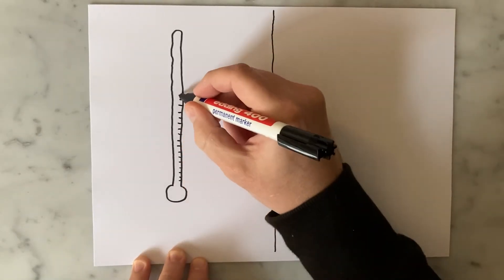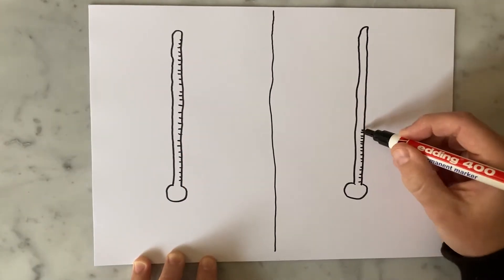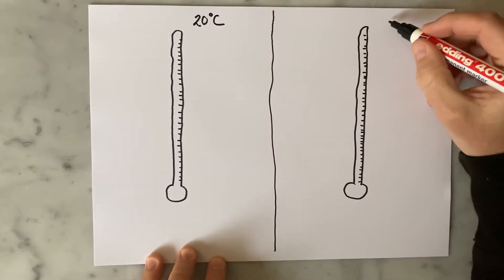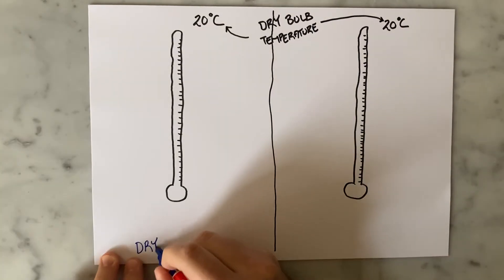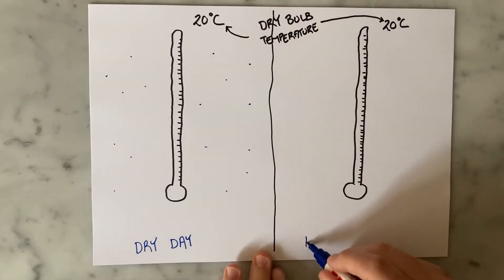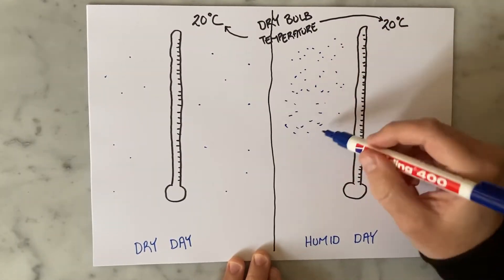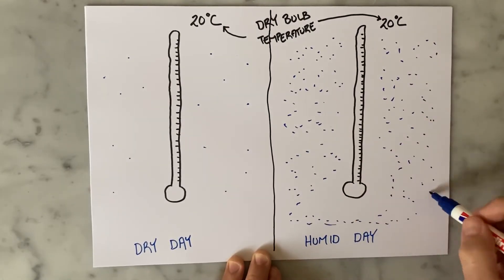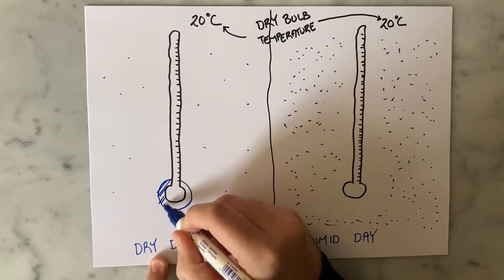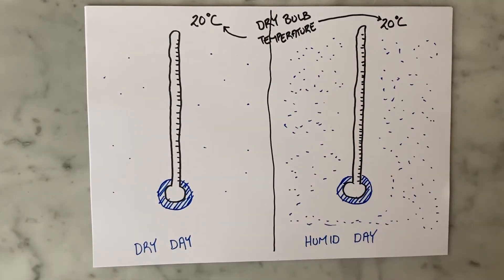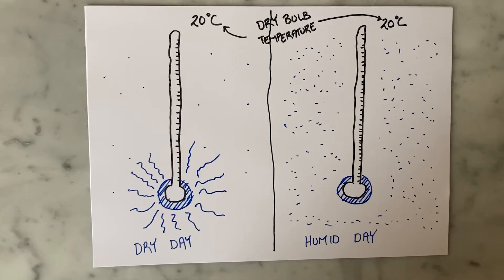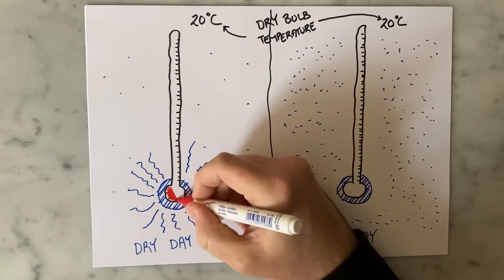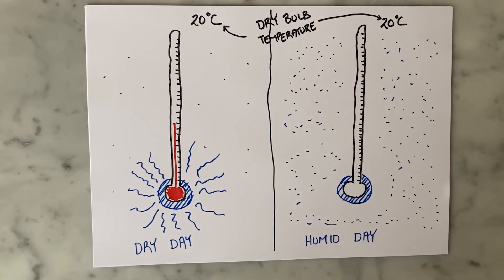Let's consider what happens in two scenarios. Take two thermometers, both reading 20 degrees dry bulb temperature. One is measuring temperature on a very dry day with little moisture in the air, while the other is measuring 20 degrees on a very humid, sweaty, clammy day. Now wrap both thermometer bulbs with a wet cloth — the wick. On the dry day, the rate of evaporation is very high because there is plenty of space in the air for water to escape into. The more water escapes, the more energy it steals from the thermometer, so the reading drops very low.